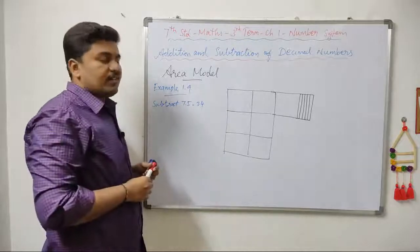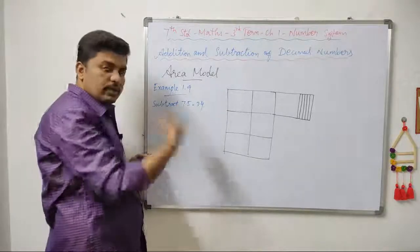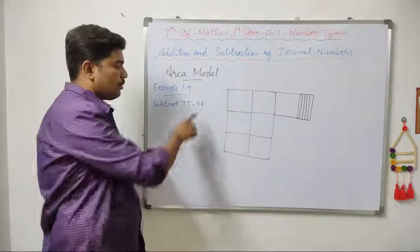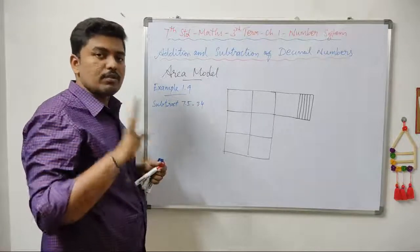Now for 3.4: 3 whole squares and 4 strips of 1 by 10.